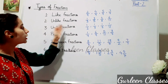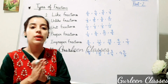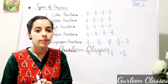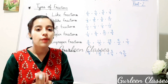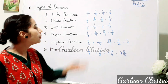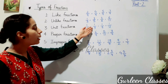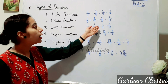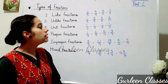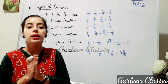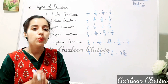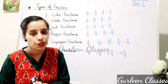Next, unit fractions. Fractions with numerator 1 are called unit fractions. For example: 1/2, 1/3, 1/8, and 1/12. Here the numerator is 1 and they are called unit fractions.